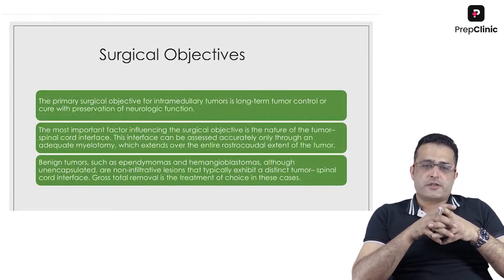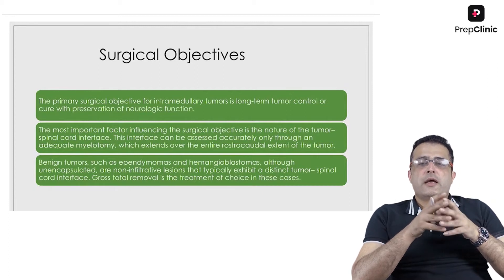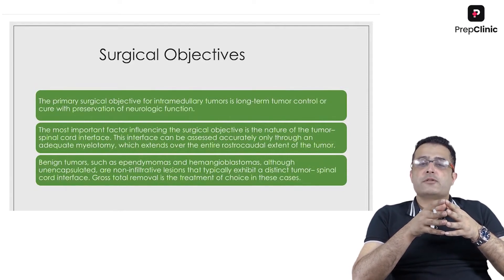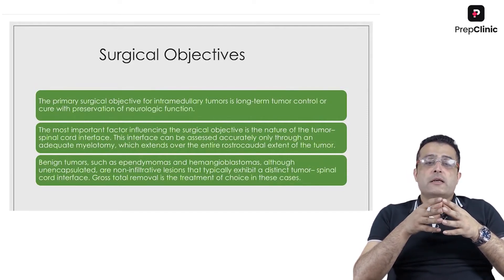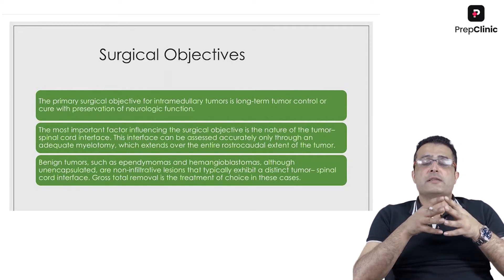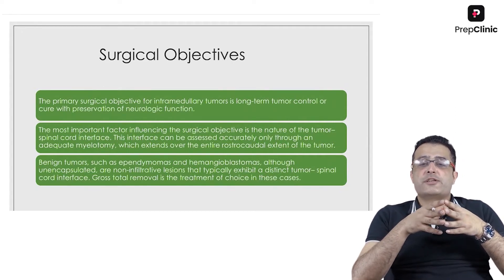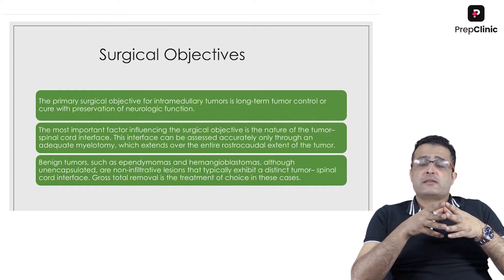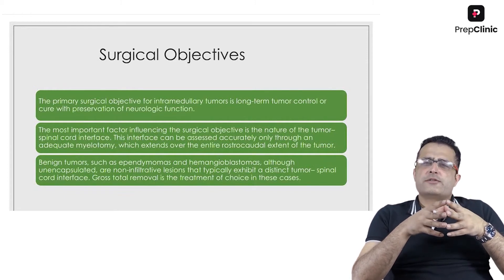What are the objectives of surgical management in these patients? The primary objective is long-term tumor control or cure, while ensuring preservation of neurological function. The most important factor influencing the surgical objective is the nature of the tumor and spinal cord interface, which is usually assessed only through an adequate myelotomy extending over the entire rostrocaudal extent of the spinal cord tumor.